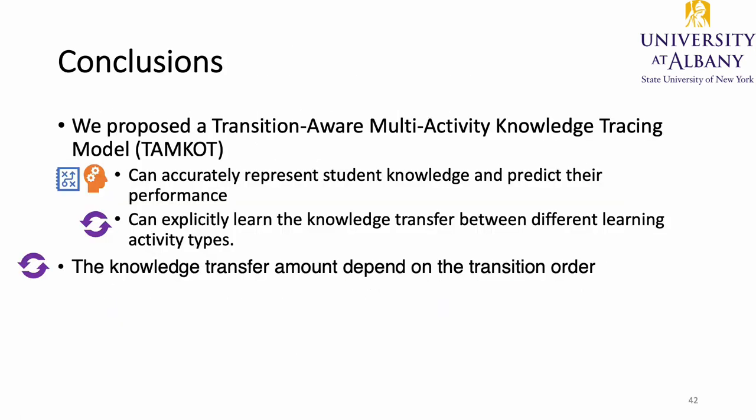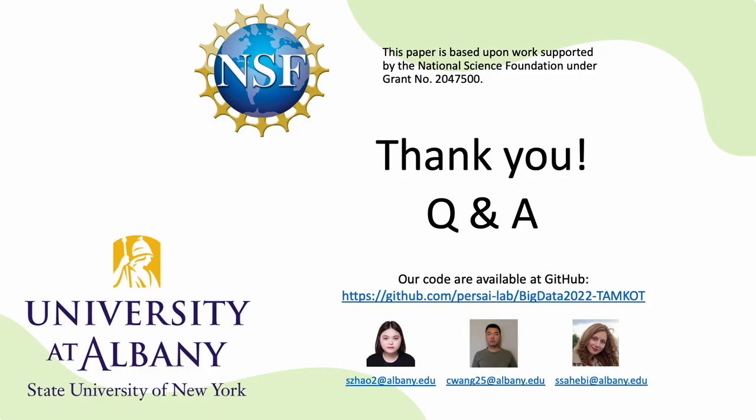To conclude, we propose TOMCOT, a transition-order multi-activity knowledge tracing model. TOMCOT can model student learning from multi-type learning activities and learn the knowledge transfer between different types. Our experiments show that transition-order knowledge transfer is necessary to accurately represent student knowledge and predict performance. We also conclude that the amount of knowledge transfer between concepts depends on the transition order between activity types. Our code and data are available at our GitHub link. Please feel free to contact us with any questions or suggestions.